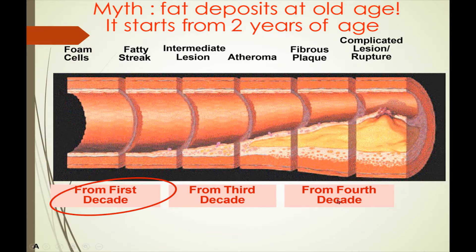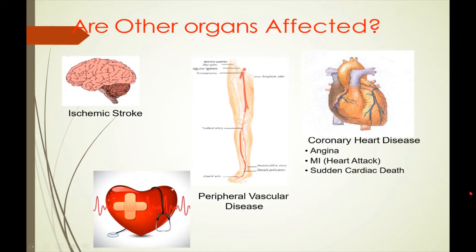Therefore, primary prevention is necessary. Atherosclerosis results in reduction in blood supply to cardiac muscles, characterized by severe pain in the chest, neck, lower jaw, left arm, and left shoulder — known as angina pectoris or heart attack. It may cause myocardial infarction, which may lead to sudden cardiac death.